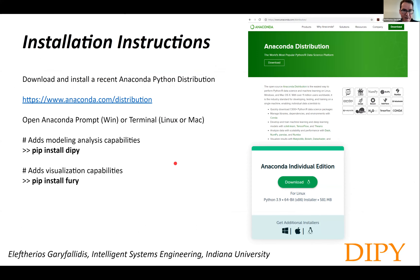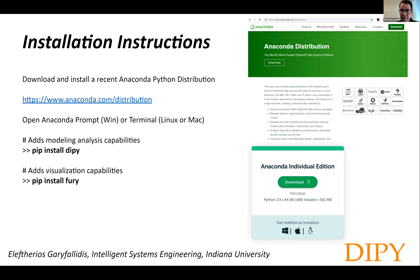Here are some installation instructions. If you're using Python, you probably already have an Anaconda Python distribution in your system or in the cloud. Maybe your university is providing you access to a cluster with Anaconda already installed. If that is the case, you may skip this step. If not, you may want to install it — you basically just go and install it from the provided link. You do not need administrative access; you can install it with simple user access.